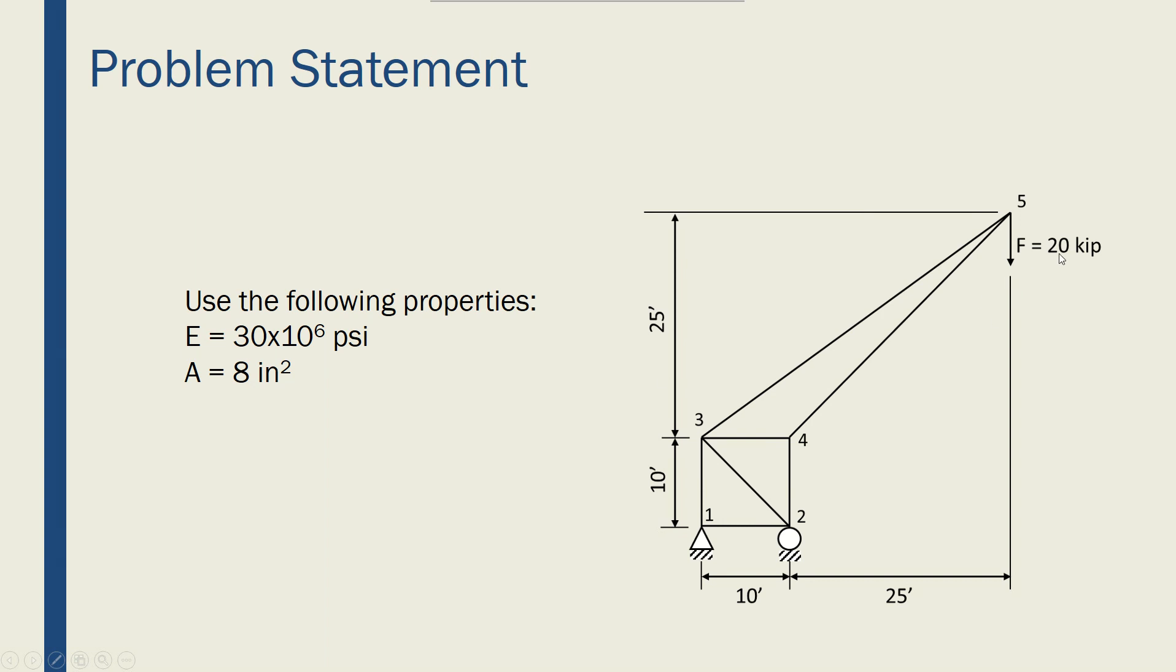There is a 20,000 pound force in the negative y direction applied to node 5. Node 1 is fixed in all directions and node 2 is only fixed in the y direction.